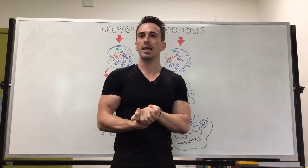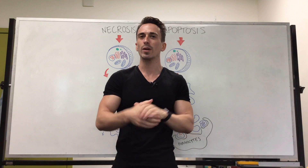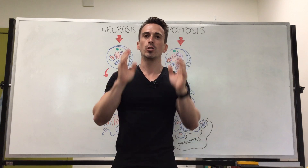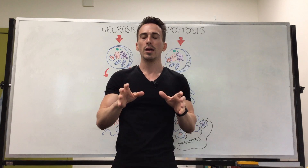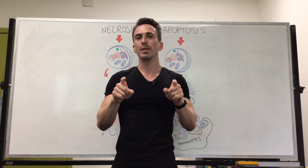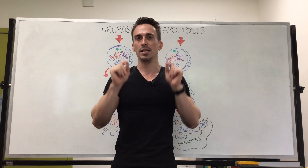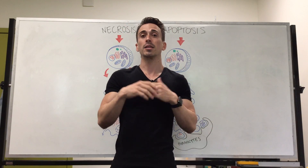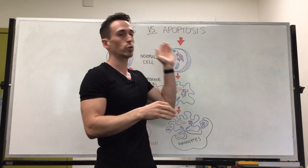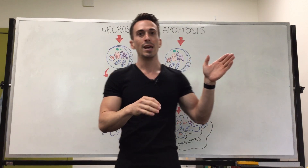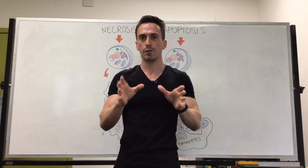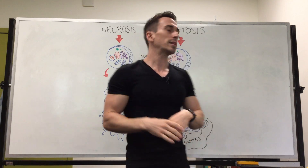Hi everyone, Dr. Mark here. Now when a cell gets damaged it will try and repair itself. If the damage is too extensive it will undergo a particular pathway that will ultimately lead to cell death. This pathway can be the necrotic pathway or it can be the apoptotic pathway, and there are some similarities but also some significant differences. Now let's have a look.